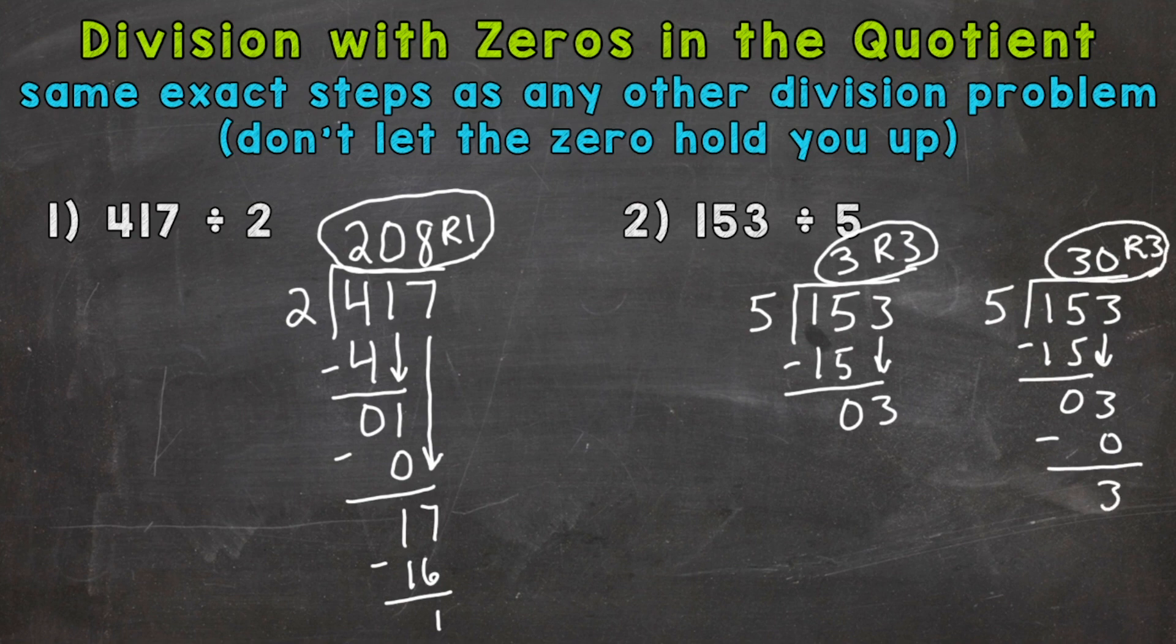So big difference here between 3 remainder 3 and 30 remainder 3. Make sure you work all the way over to the 1's place. That 0 in the quotient, again, was very important to our final answer.